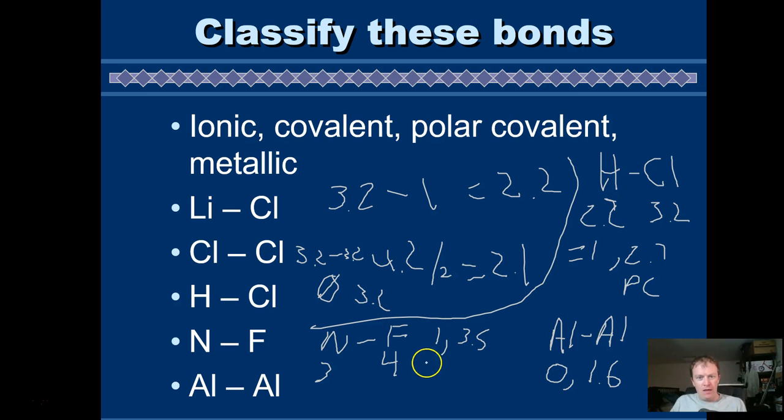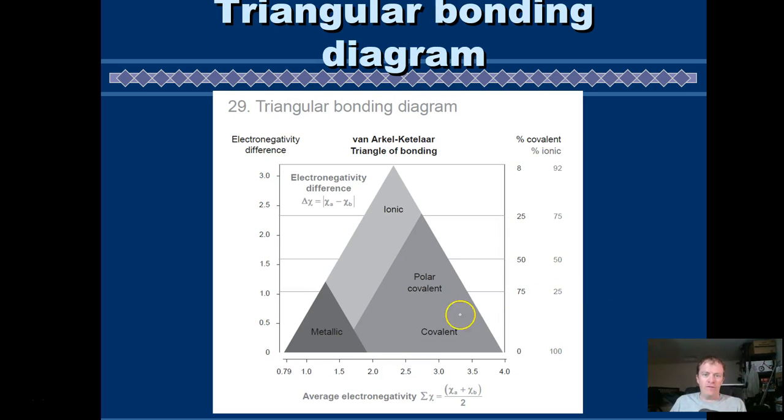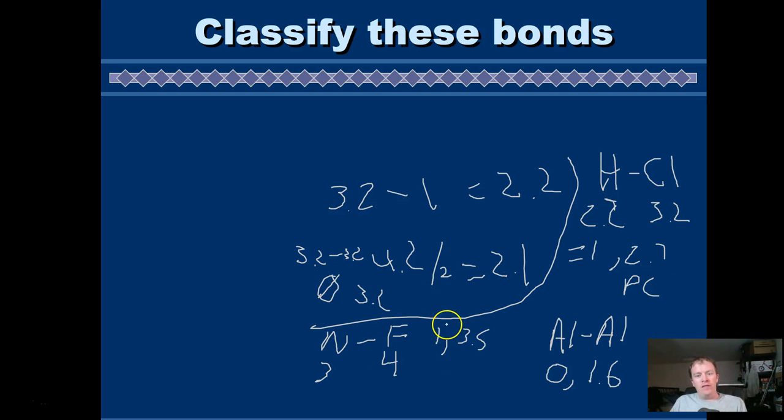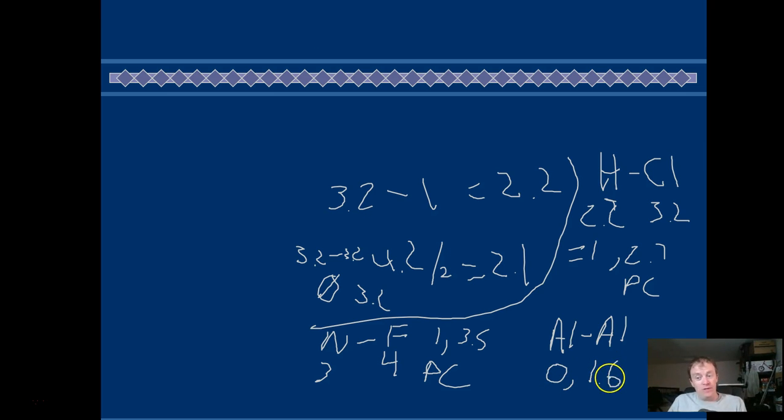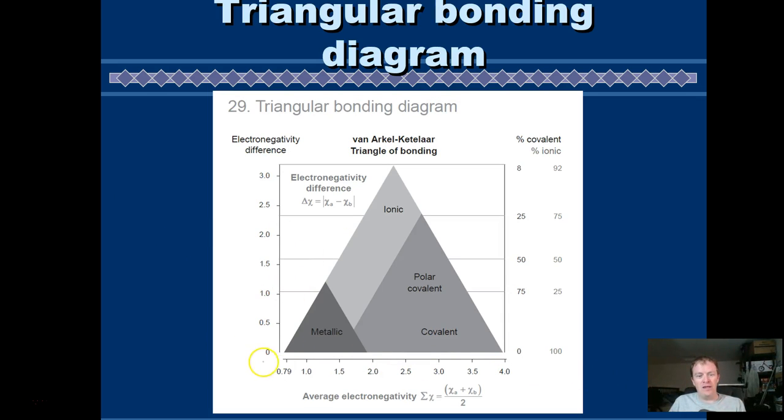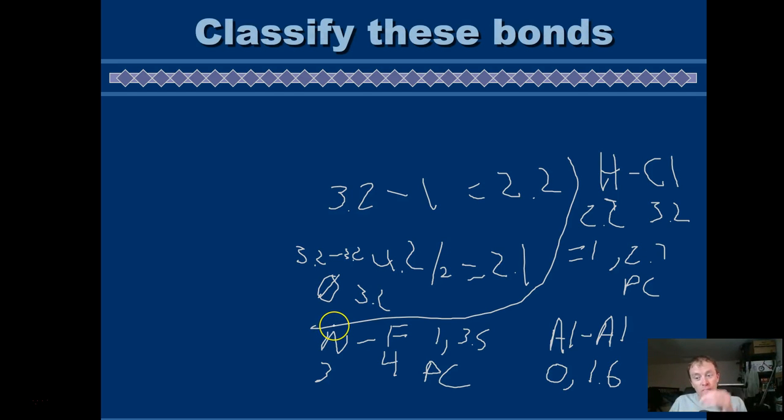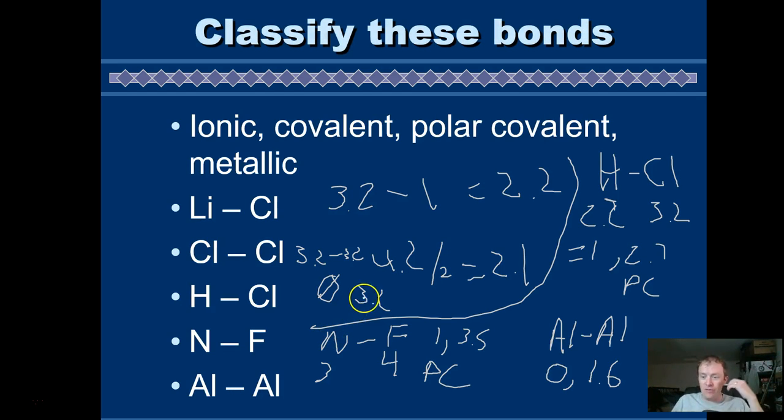Okay, here we have it nice and neatly solved here on my slide. H and Cl, their electronegativity difference is 1. Their average electronegativity is about 2.7 or something like that. So the electronegativity difference is 1, average is 2.7, so it's right here in the polar covalent realm of things. And N-F, the difference in electronegativity is 1. Average electronegativity is 3.5. Again, that's going to be in the polar covalent realm of things. And aluminum, the same elements have the same electronegativity difference is 0. Average would be the same as aluminum's electronegativity, which is 1.6. So hopefully it's no surprise. Between aluminum atoms, we have a metallic bond. So we've got a sea of electrons going on and all that kind of thing.